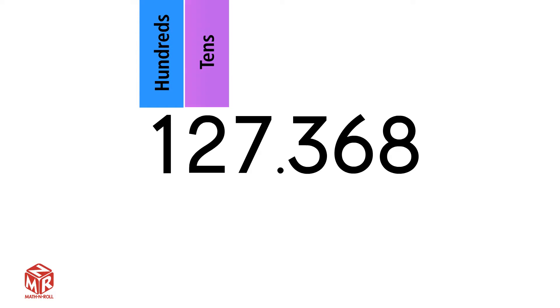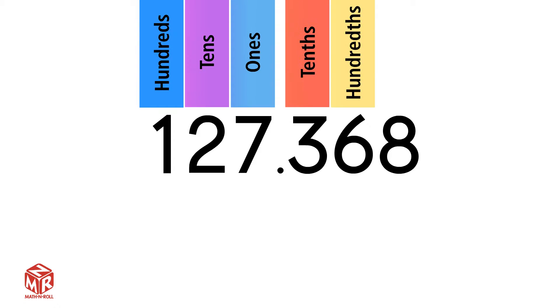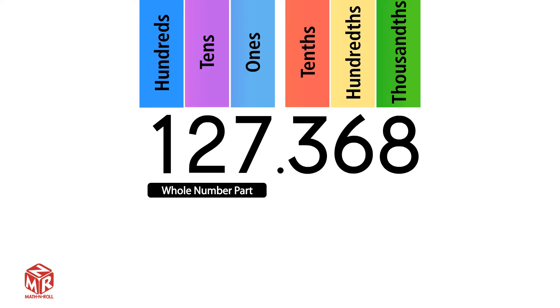Now let's take a look at decimal place value. A decimal number consists of 2 parts: a whole number and a fractional part. The whole number is to the left of the decimal.